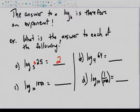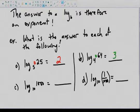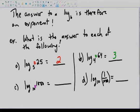For b: 4 to the what equals 64? Pretend there's a little exponent there. 4 to the 3 equals 64, so the answer is 3. For c: log base 10 of 1000 — 10 to the what equals 1000? The answer is 3. Your answer is always an exponent. If you just pretend there's an exponent there, it's much easier to understand how logarithms work.